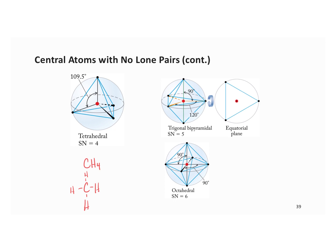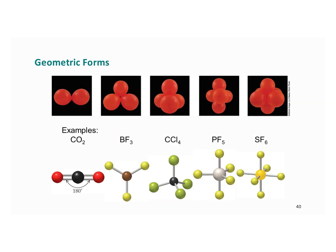For trigonal bipyramidal, there's a bond angle of 90 degrees here and a bond angle of 120 here. The 120 comes from 360 degrees divided by three for the equatorial atoms. Here are some 3D examples with steric numbers: CO2 has a steric number of two, BF3 has a steric number of three, CCl4 has a steric number of four, PF5 has a steric number of five, and SF6 has a steric number of six.